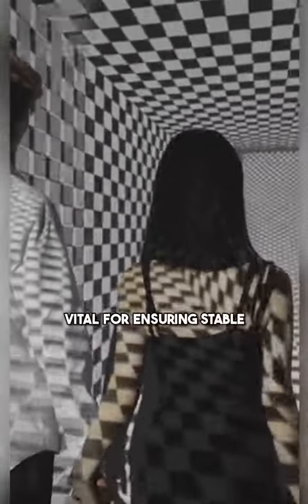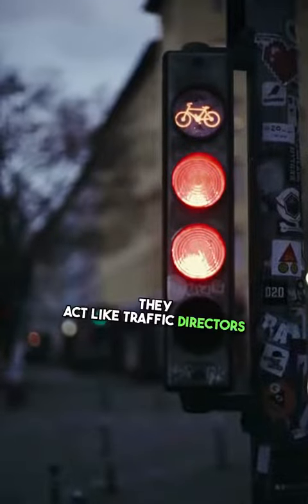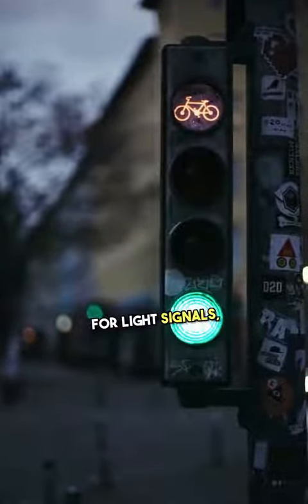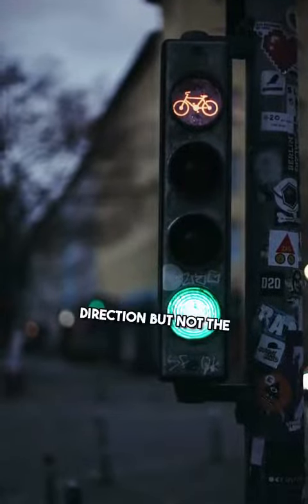Magneto-optical isolators are vital for ensuring stable optical communication. They act like traffic directors for light signals, allowing them to move in one direction but not the other.